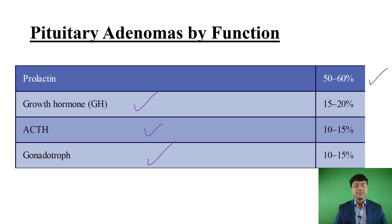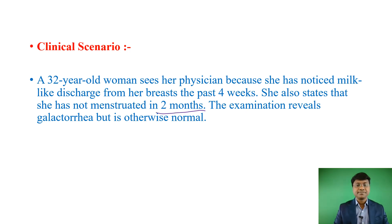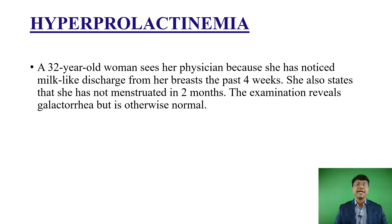Let me give you a clinical scenario. A 32-year-old woman sees a physician because she has noticed milk-like discharge from her breast for the past four weeks. She also states that she has not menstruated in two months. The examination reveals galacturia but is otherwise normal. These two features — no menstruation and milk secretion from the breast — in a 32-year-old woman are very suggestive of prolactinoma or hyperprolactinemia as an endocrine disorder.